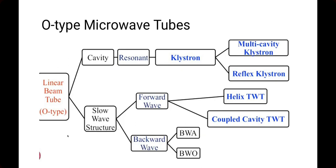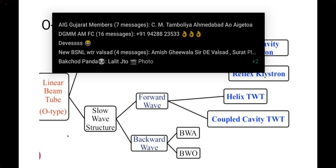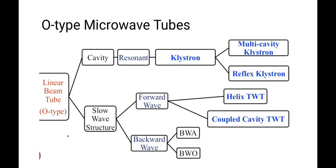So what is an O-type tube or linear beam tube? There are further classifications within linear beam tubes — cavity type and slow wave structure type. Cavity type tubes are also called resonant tubes or klystrons. Klystron is further classified into two categories: multi-cavity klystron and reflex klystron. Slow wave structure is classified into forward wave and backward wave types.